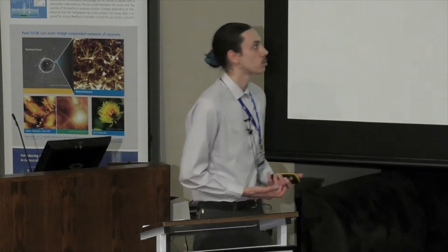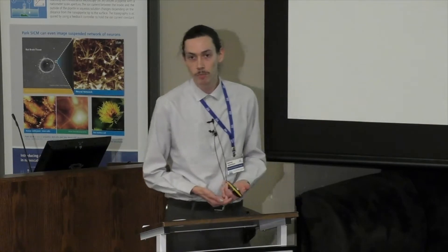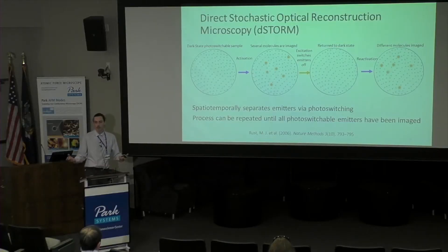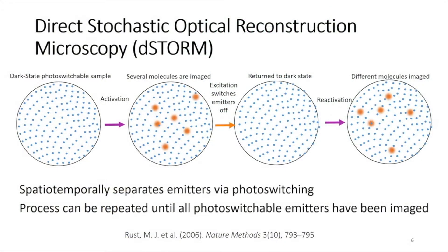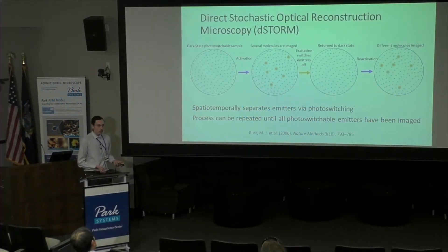The specific version I'm working with is called direct stochastic optical reconstruction microscopy, or D-STORM. The basic premise is that you are localizing and separating your single emitters by photo switching. You start with a densely labeled sample — if you were to image these all at once, it would just be one big blur. By switching these all into a reversible off state, you can then activate a subset of your molecules with an activation beam, usually in the UV region. Depending on the intensity and duration of your activation pulse, you change the fraction of emitters that you reactivate.